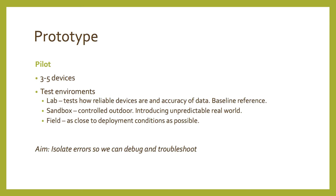For a pilot, we usually deploy three to five devices, and we have three testing environments. In the lab environment, we're able to test how stable and reliable the system is and how accurate the sensors are. Then we have a sandbox, which is a controlled outdoor environment. Finally, we have the field test, where the environmental conditions are as similar as possible to the deployment conditions. The aim of using these three different environments is to isolate any errors that we find so that we can effectively debug them.